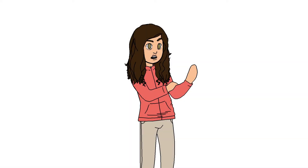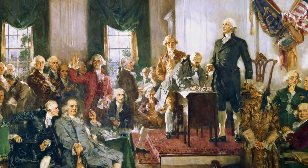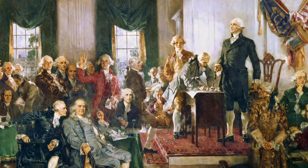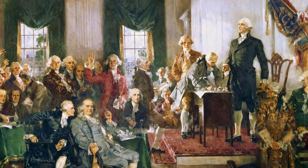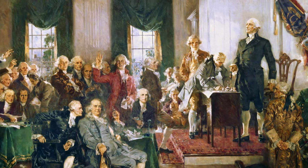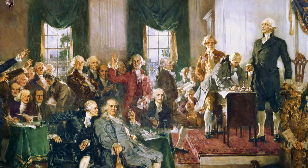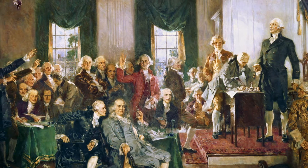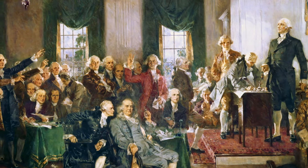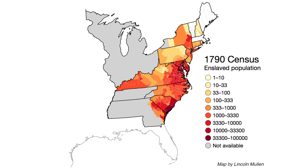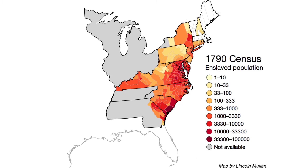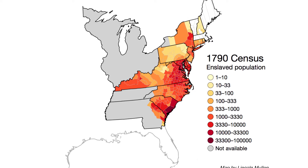The socio-political conflicts which led to the US Civil War began boiling decades before the war started. From independence, the balance of power between the North and South was a point of controversy, and compromises were already being made to stave off discontent between states which relied on heavy slave labor and those which didn't.